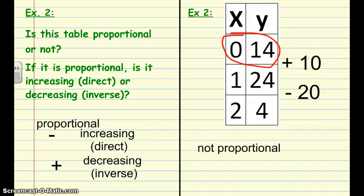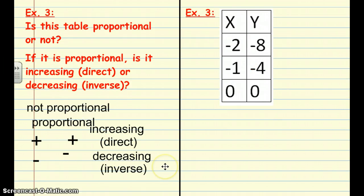Last example. Again, is this table proportional or not? So take a moment to copy this table down. So first thing I'm going to take a look at is the Y column. I see that it goes from negative 8 to negative 4 and from negative 4 to 0. So what's happening in that? Right, it's going up by 4.